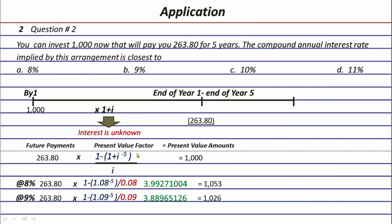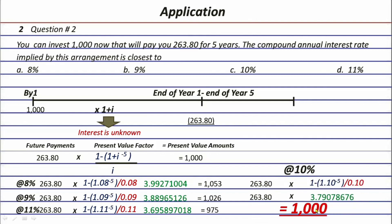Moving forward, if I try eleven percent I get 975 — that's too low — so let's try ten percent. Using ten percent gives a present value of exactly one thousand, so ten percent is our answer. One key takeaway: when solving time value of money problems, your goal should be to fill in the formula — payments times present value factor equals present value — with the given information first, before solving. That's question number two.